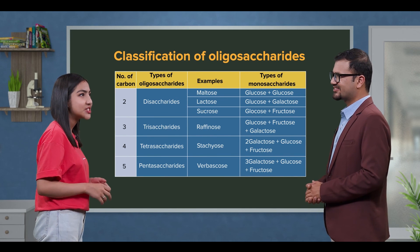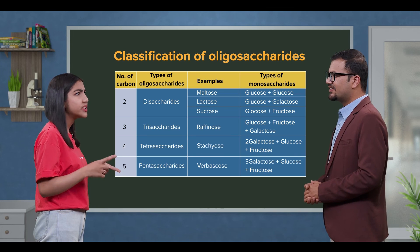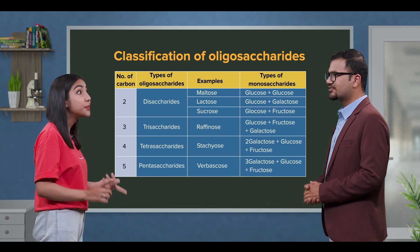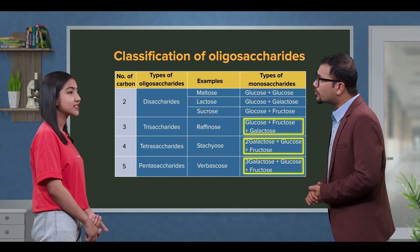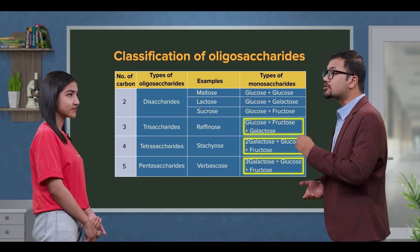In the oligosaccharides classification table, teacher, oligosaccharides are made up of up to 10 monosaccharides. And glucose, galactose, and fructose monosaccharides combine to form oligosaccharides.